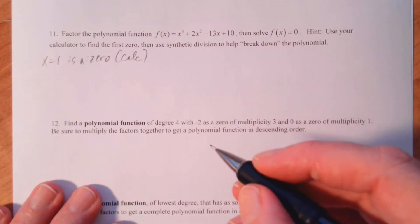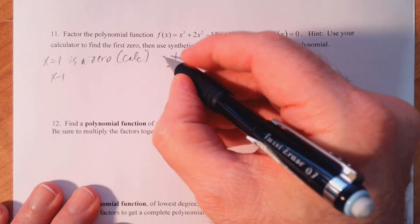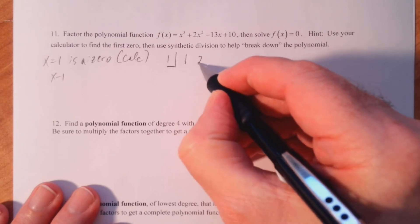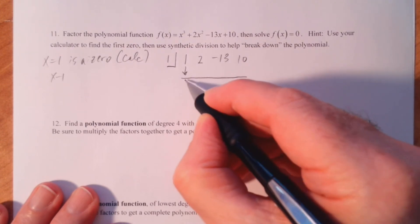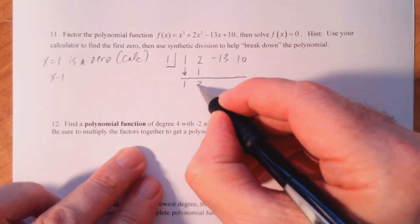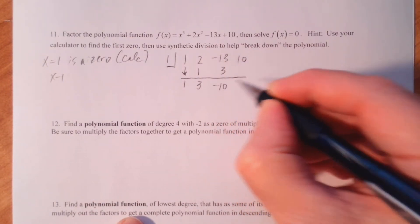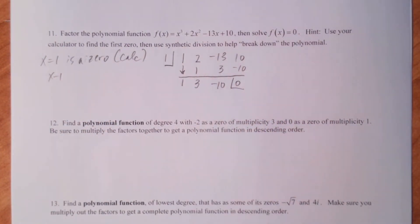Now we're going to divide by x minus one. So that means one goes in the box, and our coefficients here are one, two, negative thirteen, and ten. So let's do the synthetic division — drop the one. When you multiply the ones here, you get one. Two plus one is three. One times three is three. Negative thirteen and three is negative ten. One times negative ten is negative ten, and when we add that to ten, we get zero.